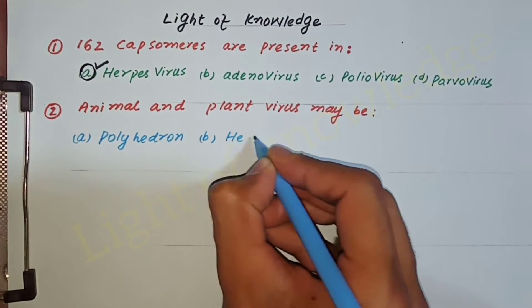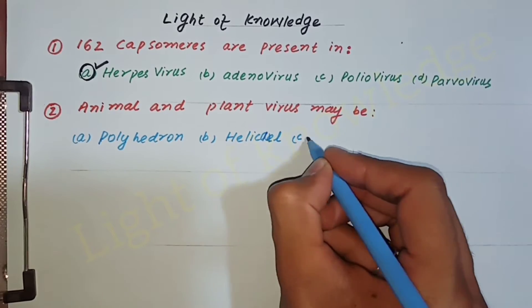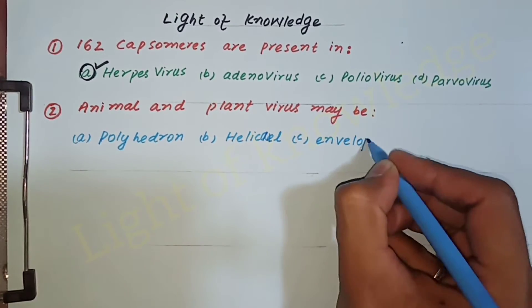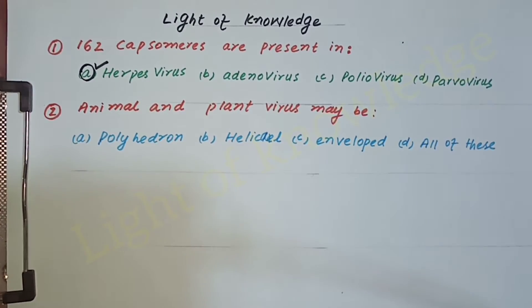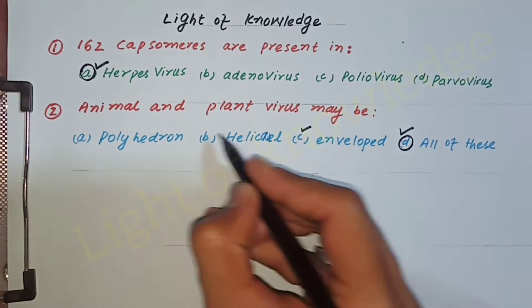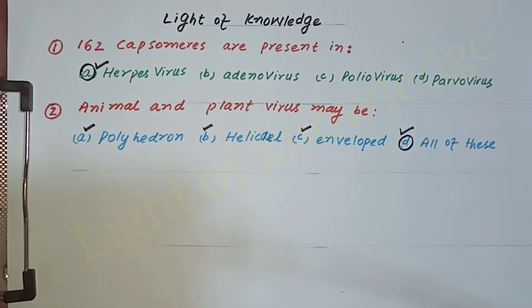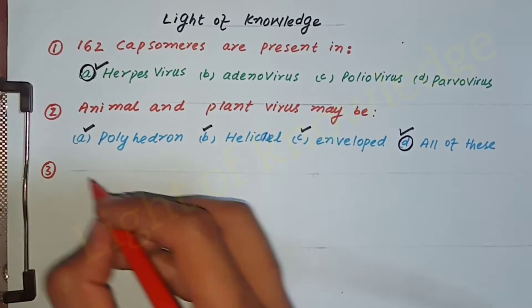Question number two: Animal and plant viruses may be — polyhedron, helical, enveloped, or all of these? The correct answer is D — all of these. They may be polyhedral, helical, or enveloped.